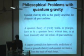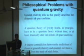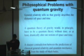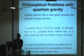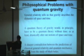Unfortunately, gravity is harder to deal with. General relativity tells us that gravity describes the dynamics of space and time. A quantum theory of gravity would, in principle, have to be a quantum theory without time, or at least drastically alter our notions of space and time. We can make this more precise by considering the predictions of classical general relativity and quantum mechanics when we study black holes.